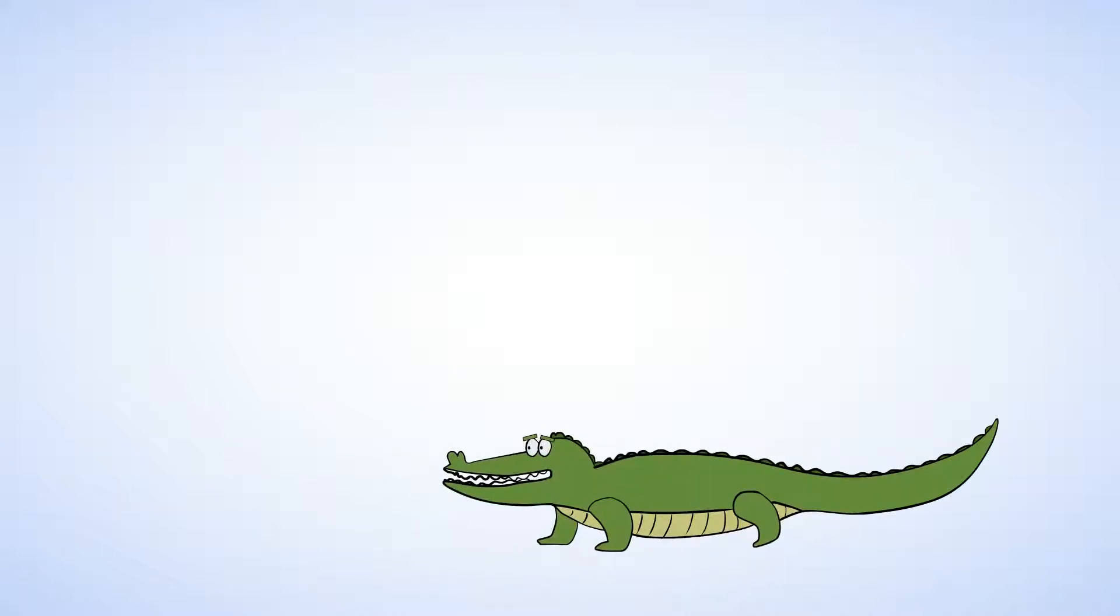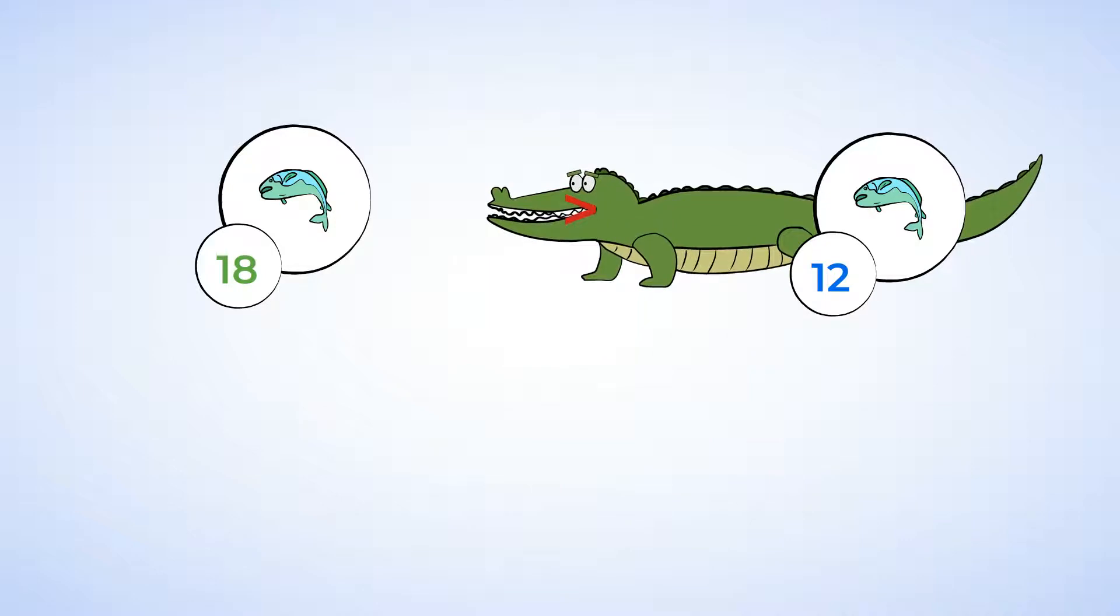Now, an alligator has to choose between eating 18 fish or eating 12 fish. Because 18 is more than 12, it'll choose to eat 18 fish. It'll face the number 18 and open its mouth and chomp. Its mouth looks like the greater than symbol, doesn't it? We can say this out loud as 18 is greater than 12.